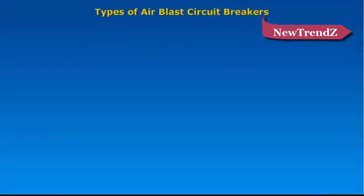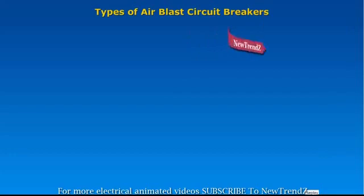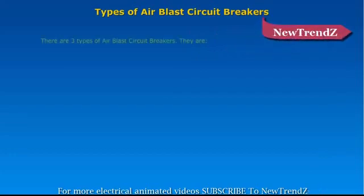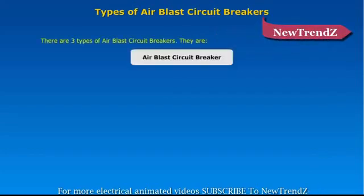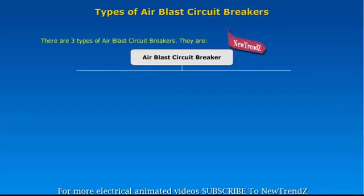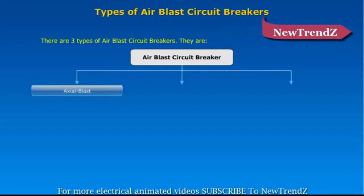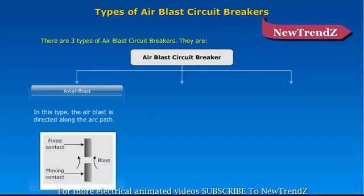Types of air blast circuit breakers. There are three types of air blast circuit breakers: axial blast, cross blast, and radial blast or double blast.